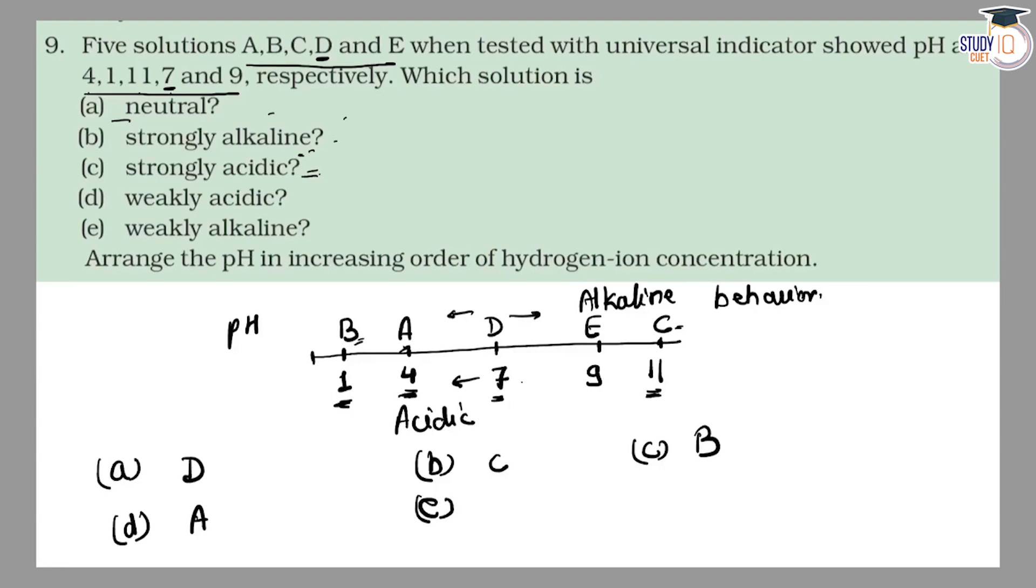Part E, weakly alkaline means it will be greater than 7, but not very much greater. And this will be 9 value, which will be solution E.